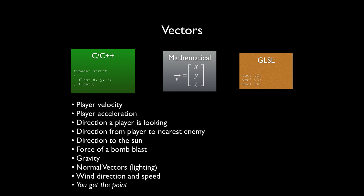There's tons of things vectors are useful for: player velocity, player acceleration, the direction the player is currently looking, the direction from a player to the nearest enemy, the direction to the sun, the force of a bomb blast, gravity — all of these are vectors. Normal vectors are vectors used for lighting — specifically the normal vector of a surface, which I'll cover later. Wind direction and speed can be represented by a single vector, with direction being the direction and speed being the magnitude. There's so much more you can do with vectors than with standard points, and that's why it's important to learn how they work.